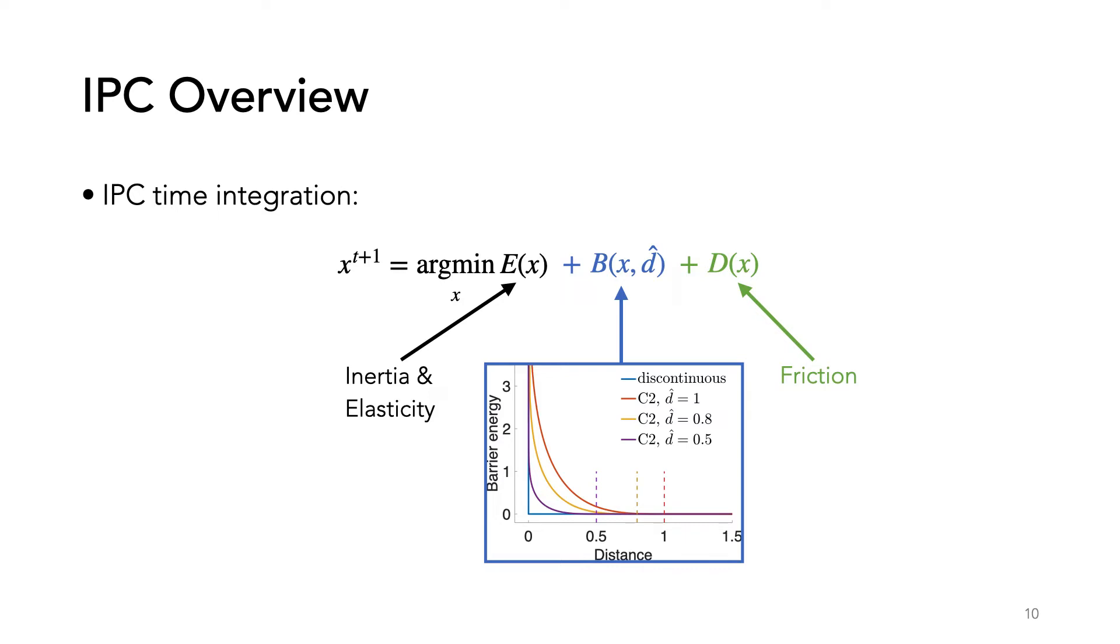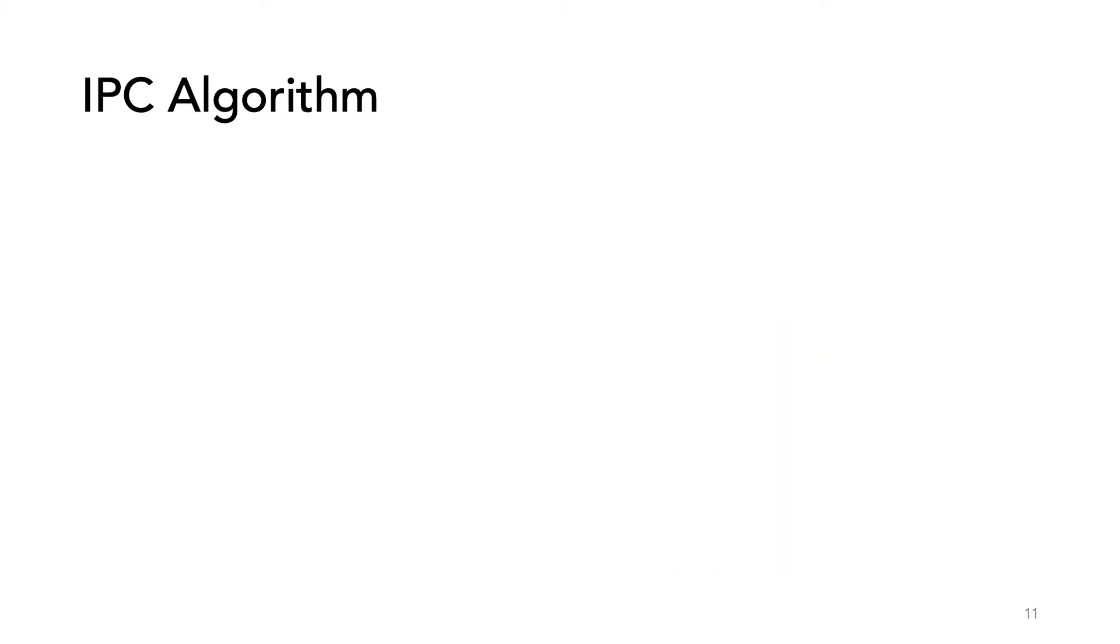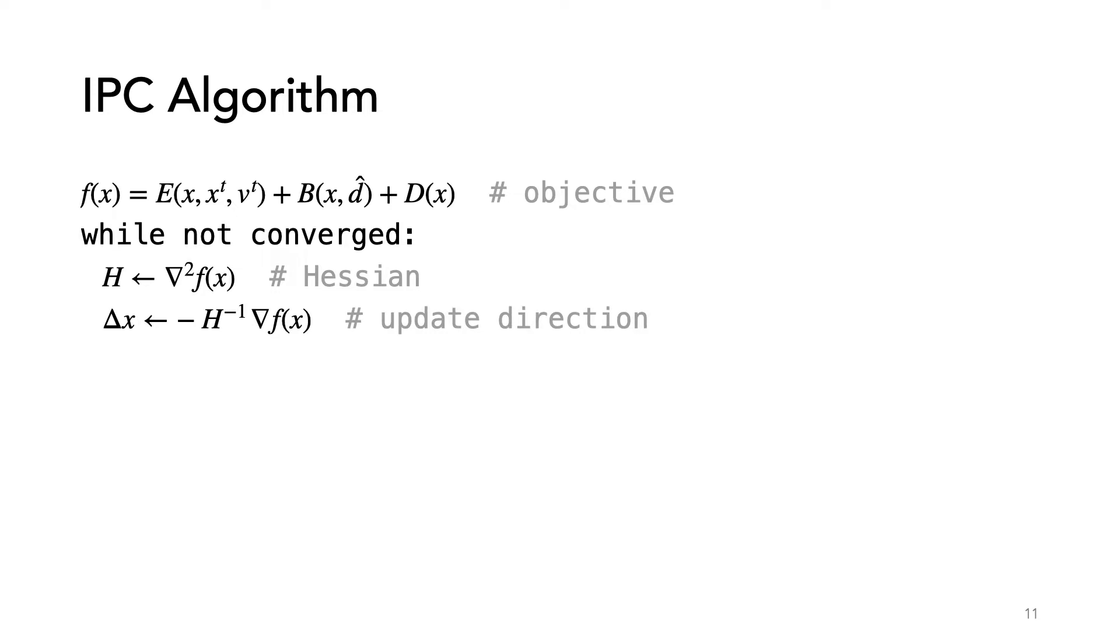This unconstrained formulation is great because we can optimize it using a slightly modified Newton's method with filtered line search. To understand this, let's look at pseudocode for the IPC solve. Let's first call our objective function f. Then we can minimize f iteratively using Newton's method. We first compute the Hessian of f, and then use it to compute an update direction delta x.